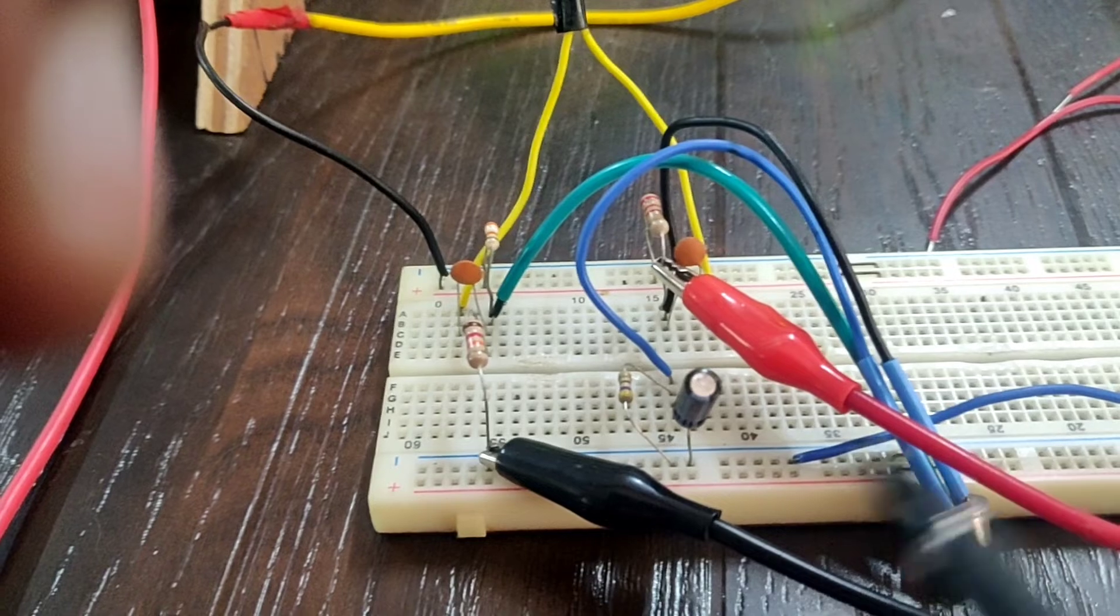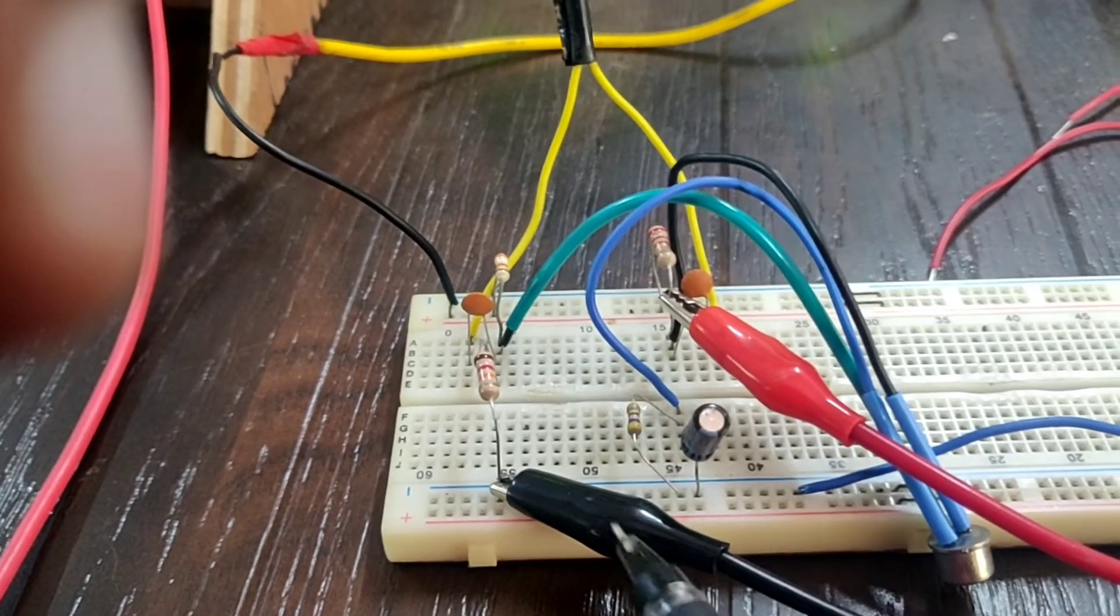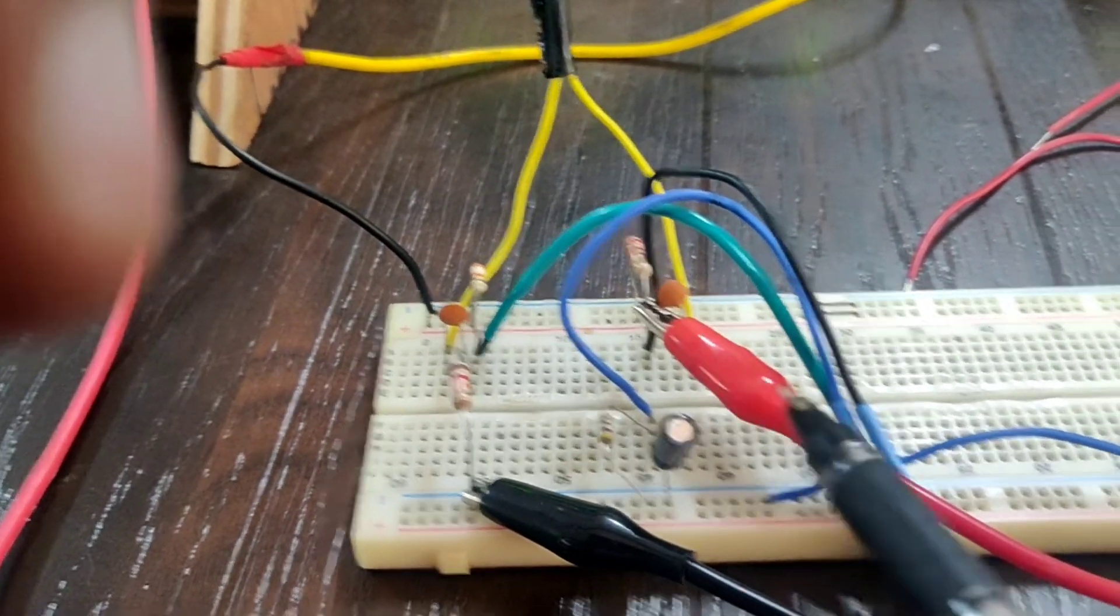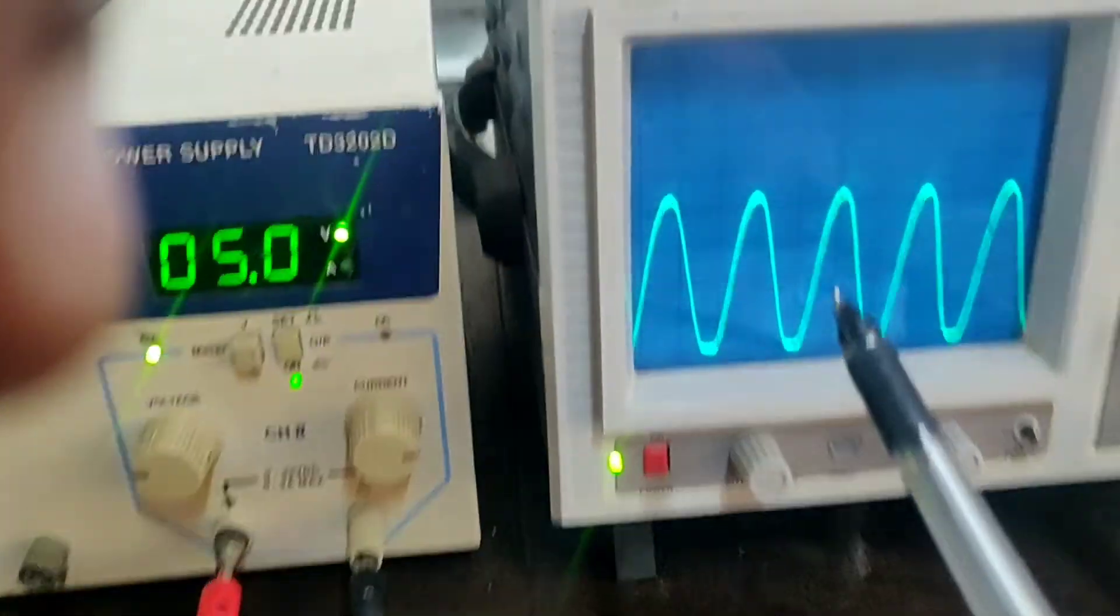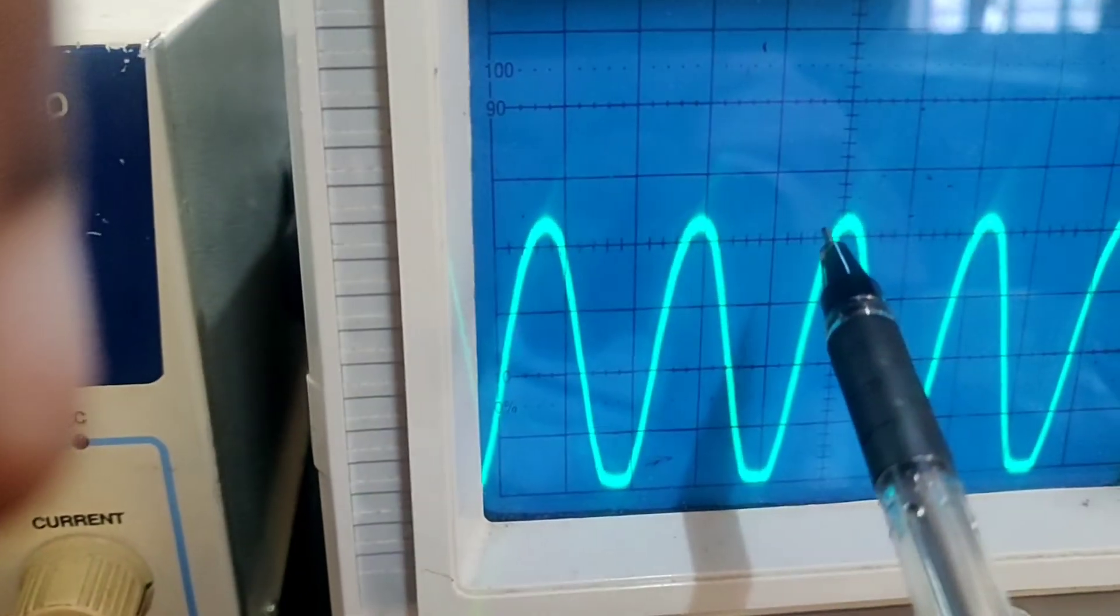Now the power supply is switched on and a CRO is connected to the collector where we will get the output and monitor on the CRO. See exactly, it is a sine wave.